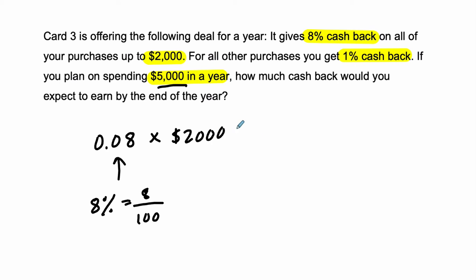And then, what's going to happen after that? Plus, you're going to get 1%, so that's 0.01, and that's just 1% equals 1 divided by 100, times all the money that, after $2,000, essentially. So, it's times, in this case, it's $5,000 minus that $2,000.